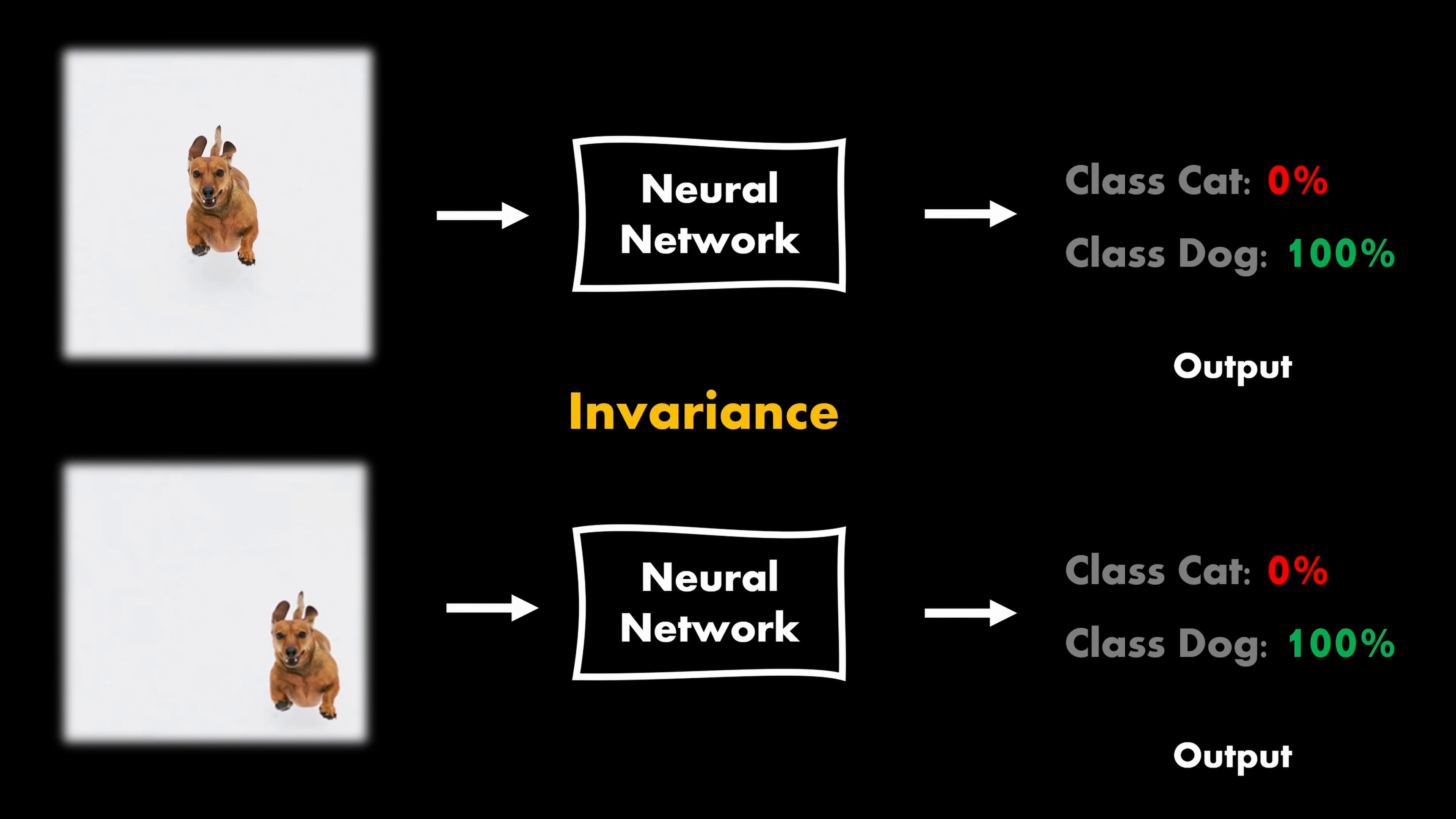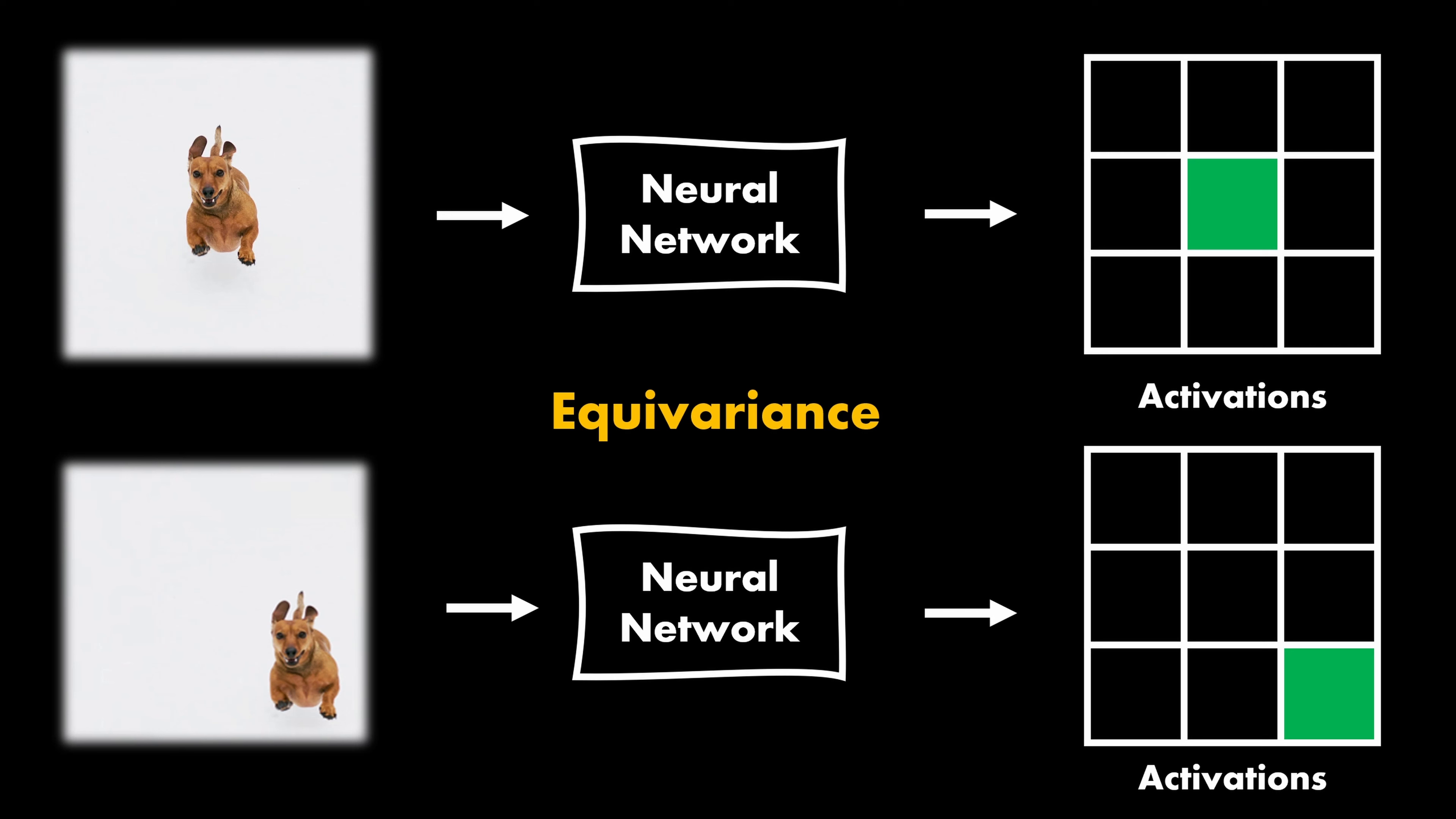These so-called set functions, like max, mean, sum, and so on, are a simple way to achieve invariance. One important point is that equivariances and invariances are always defined with respect to some transformation class. In this case, it is translation onto the images, because we have been moving the dog in the two-dimensional pixel space.